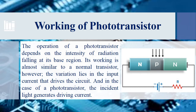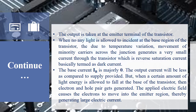The phototransistor shown here is an NPN transistor, where P is the base region. Its working is almost similar to a normal transistor; however, the variation lies in its input — in a normal transistor the base current drives the circuit, while in a phototransistor, the incident light generates the driving current. The output is taken at the emitter terminal. When no light is incident on the base region, due to temperature variation and movement of minority carriers across the junction, a very small reverse saturation current flows — basically termed as dark current.